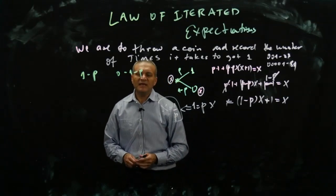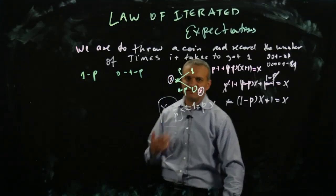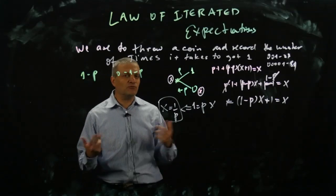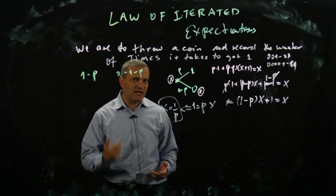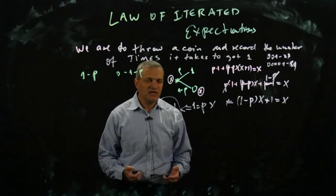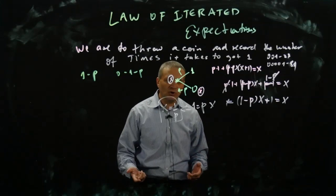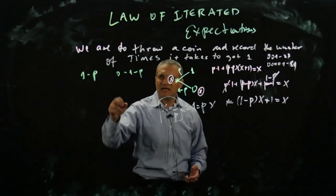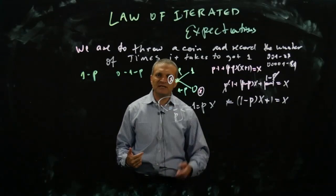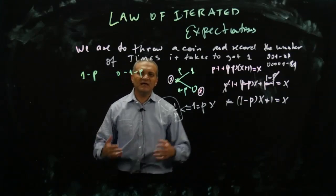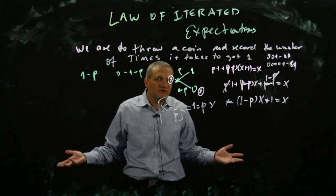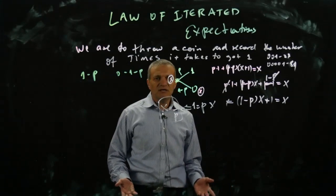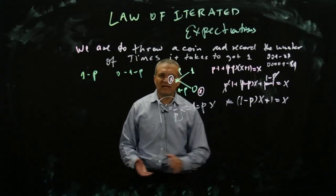What does x equals one over p mean? It means that if your probability of success is one third, on average it will take you three throws to get the first one. If you throw a coin and get one with probability one over ten, it will take you ten throws on average to get a one. This is quite intuitive.